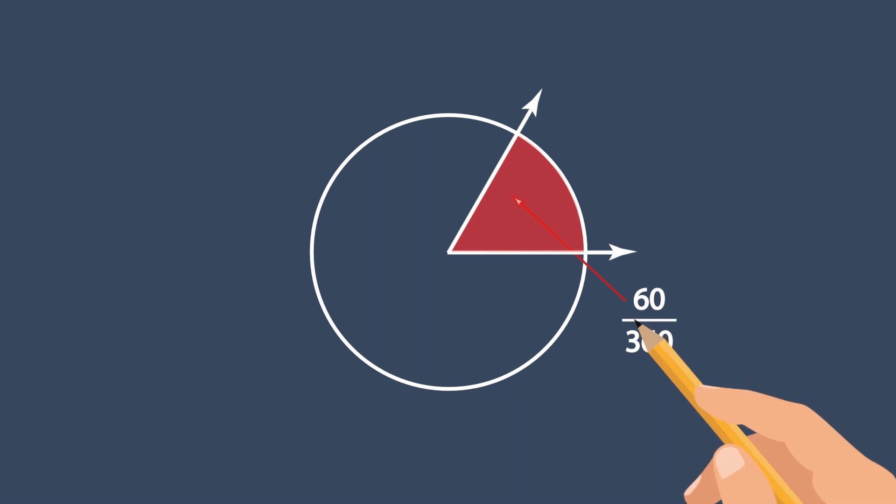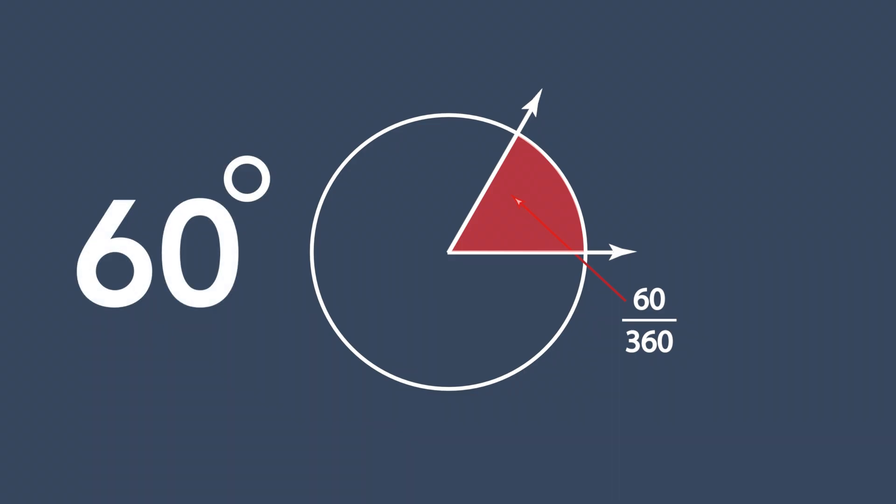Let's do another one. We have 60 out of 360 equal parts. We need to find the measurement of the angle. We look at the numerator, 60. So the measurement of the angle is 60 degrees.